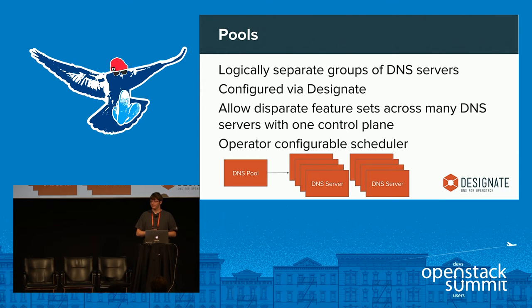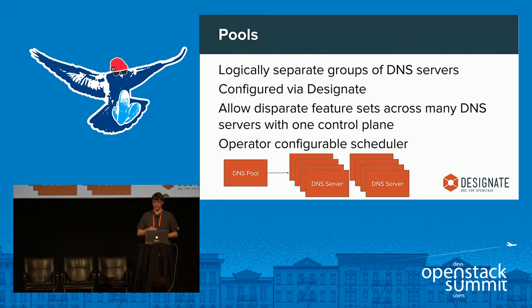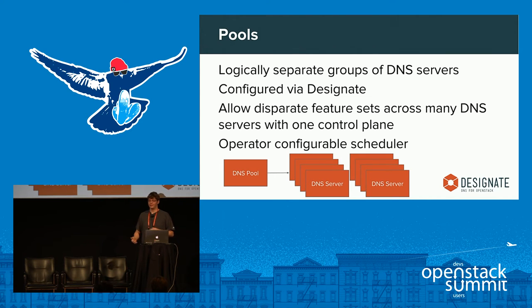Pools are logically separate groups of DNS data running on completely separate sets of servers. You might have pool A and pool B serving different purposes — similar to how Dyn or AWS Route 53 gives you different sets of name server records when you create a zone. You should have many pools to distribute your zones and so that when one pool has a problem, not all your customers are affected.